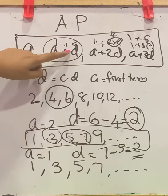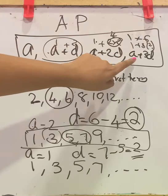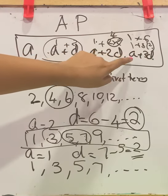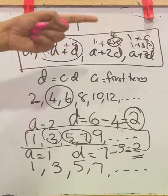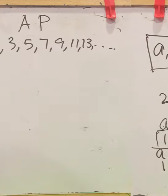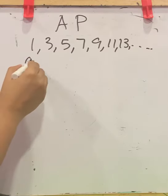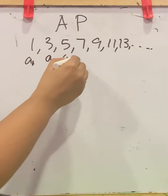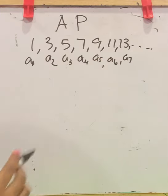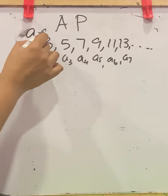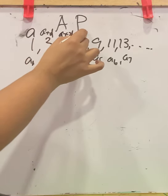Simply, A plus D means A plus 1 times D. Next is D times 2 plus the first term. Then D times 3 plus the first term, and so on. Now, let us name the terms: this is A1, this is A2, A3, A4, A5, A6, and A7. We know A1 is A (the first term). A2 is A plus D. A3 is A plus 2D. A4 is A plus 3D, and so on.